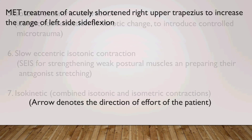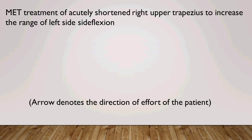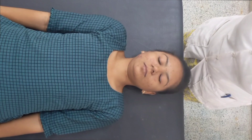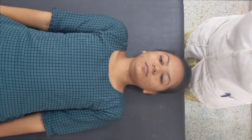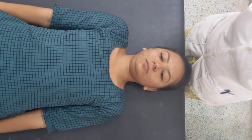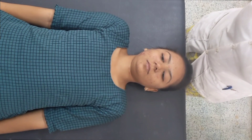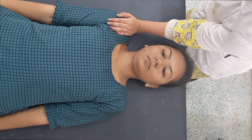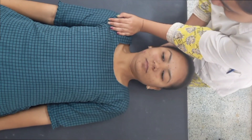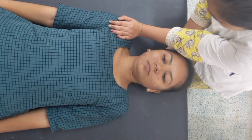MET treatment of acutely shortened right upper trapezius to increase the range of left side flexion. Patient position: supine lying, arms by the side. Therapist position: standing behind the head of the patient with crossed arms — one hand stabilizes the shoulder and the second hand supports the cervical spine and atlanto-occipital area.